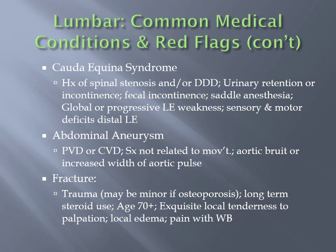Red flags for cauda equina syndrome include a history of spinal stenosis and/or degenerative disc disease — anything that creates narrowing of the spaces. Associated flags include urinary retention or urinary incontinence, fecal incontinence, anesthesia in the saddle area (the pelvic floor). Global and/or progressive weakness in the lower extremities is also associated with this syndrome, as well as sensory and motor deficits, generally more in the distal aspects of the lower extremity and may be bilateral or unilateral.